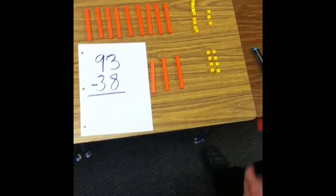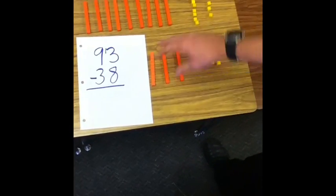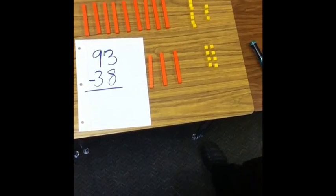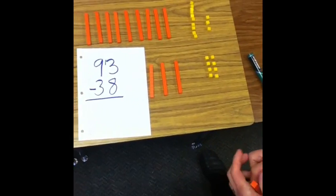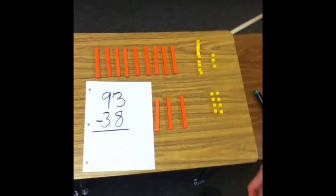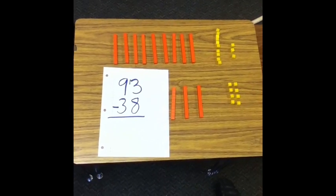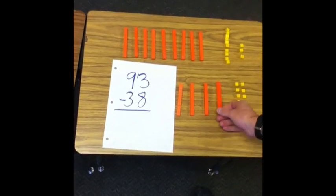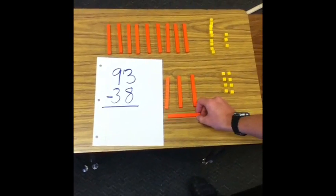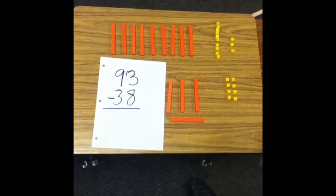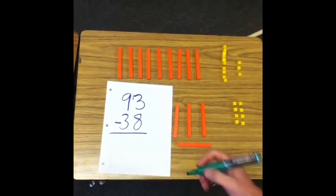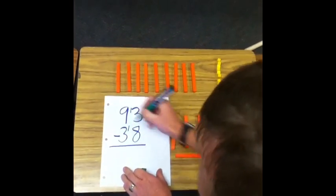Alright, well since I gave the 93 a 10, that means I have to subtract 10 more. So I'm going to give the 38 a 10. But instead of giving the 38 a 10 in the form of 1s, I'm going to give the 38 a 10 in the form of a 10. So there it is. And the way I record that on my paper is I put a 1 next to the 3.